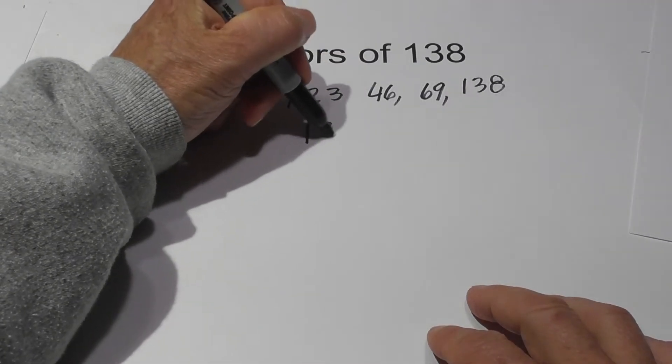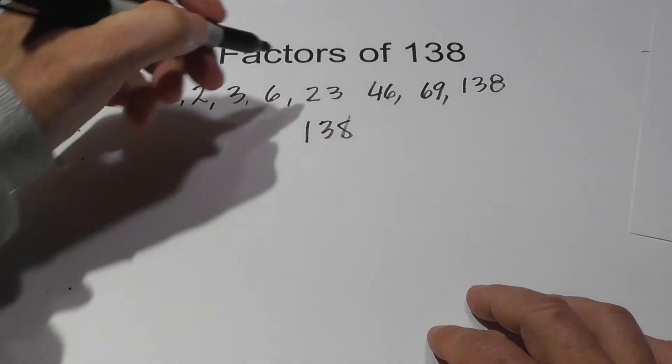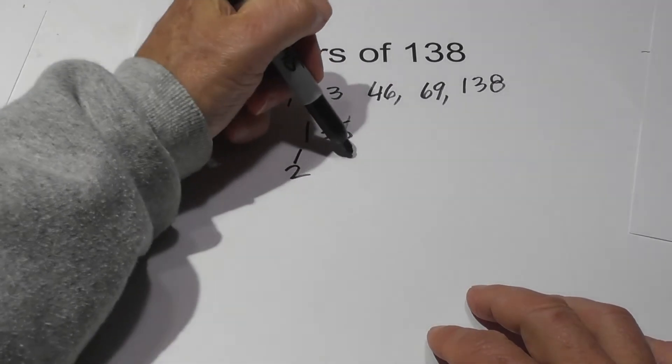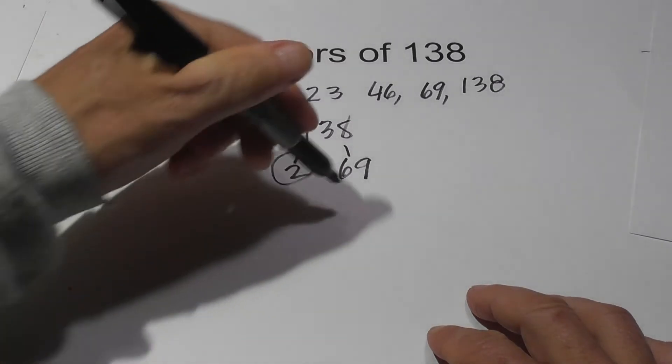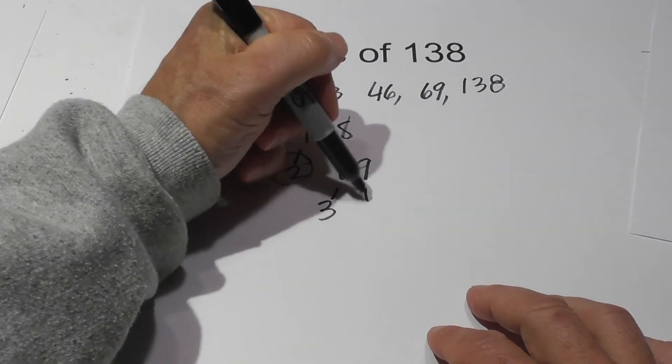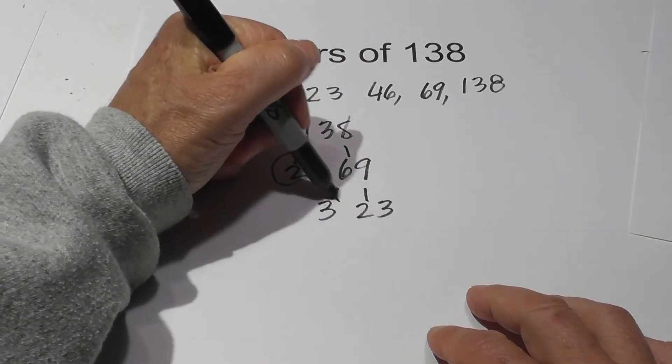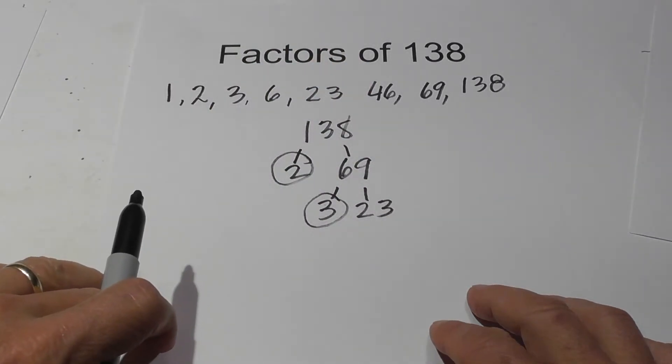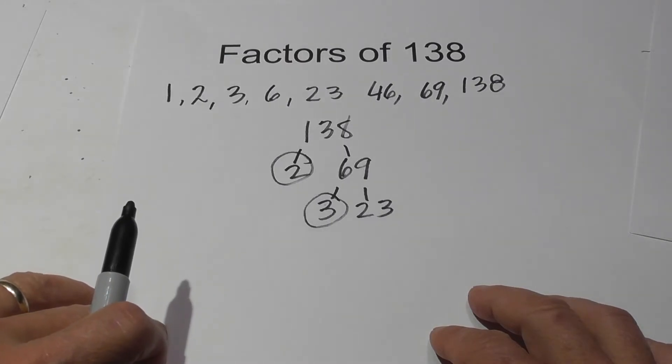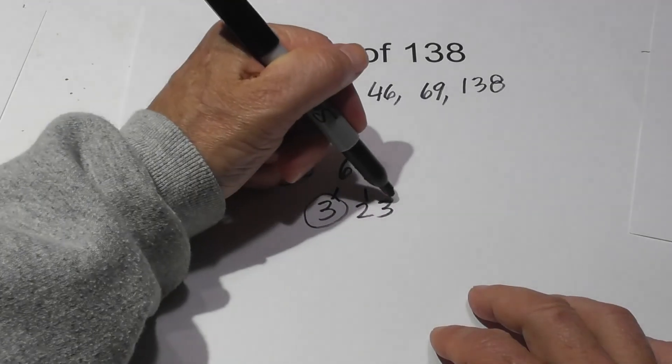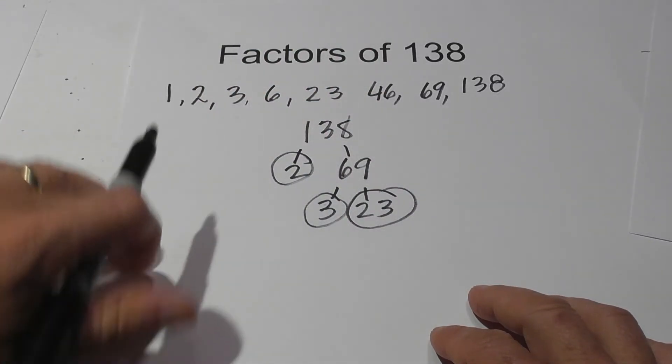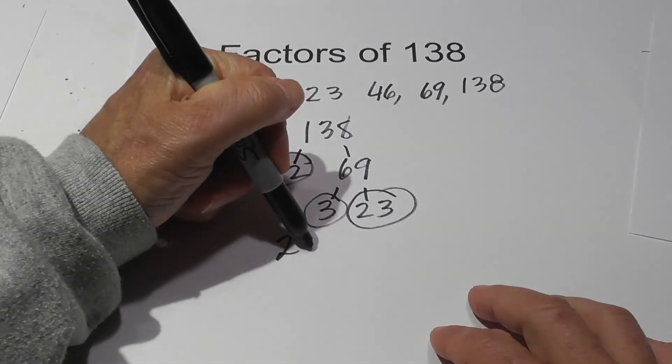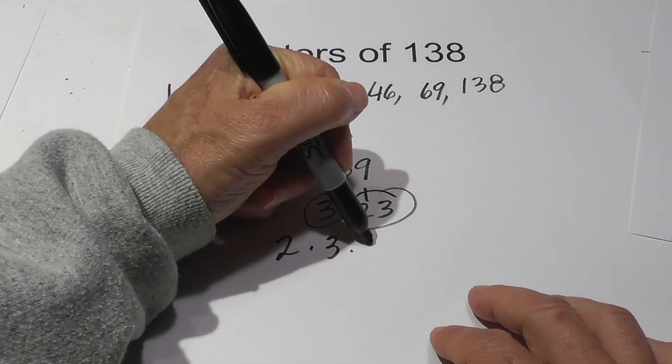Now for the prime factorization, let's do 138 and begin with 2 times 69. Circle the 2 because it is prime. Now, 3 times 23, circle the 3 because it is prime. That equals 69. And then 23 is prime also. So let's circle that. So the prime factorization of 138 is 2 times 3 times 23.